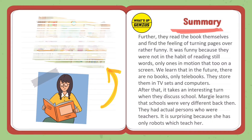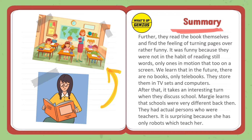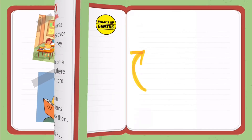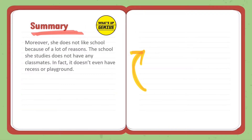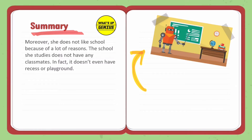The story takes an interesting turn when they discuss school. Margie learns that schools were very different back then — they had actual persons who were teachers. This is surprising to her because she has only robots who teach her. She does not like school for a lot of reasons: it has no classmates, no recess, and no playground.